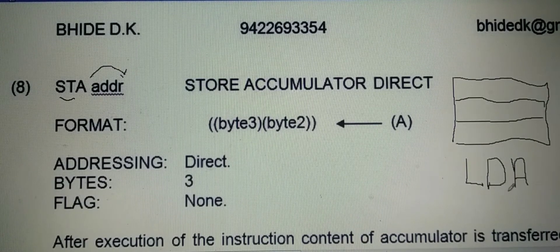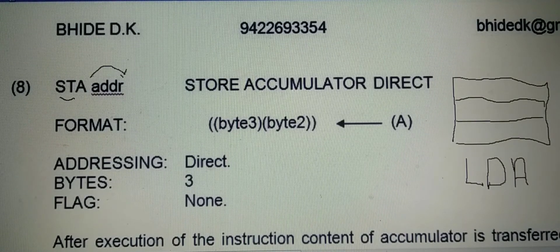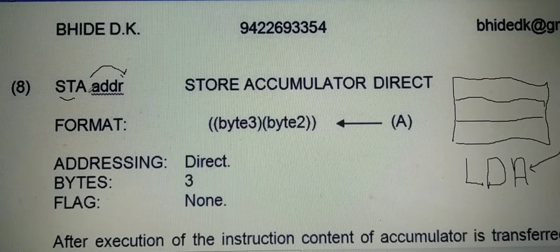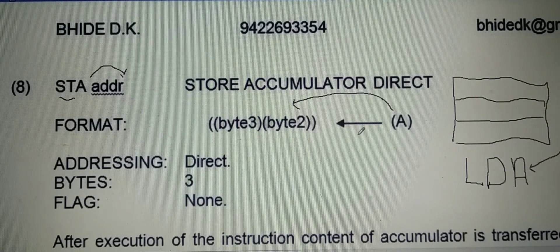In LDA, what happens? Load accumulator — that means from a memory location we are bringing the number to the accumulator. And here, from the accumulator we are storing the number to a specified memory location.